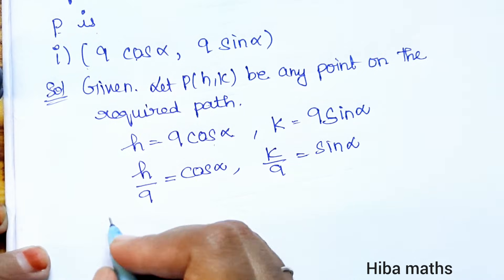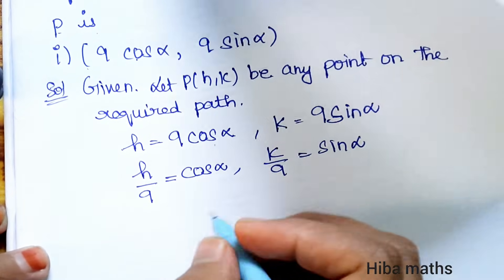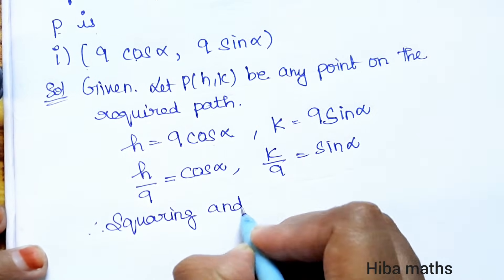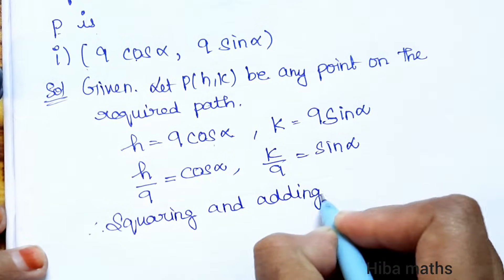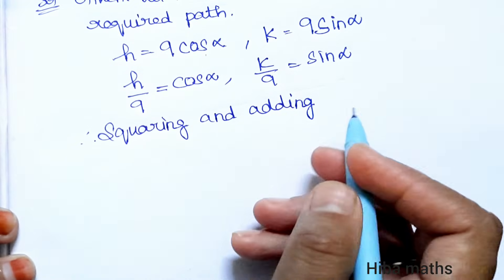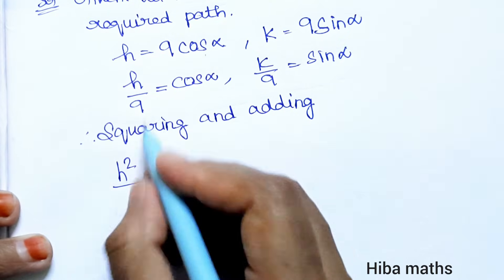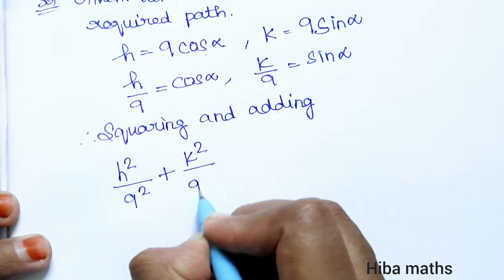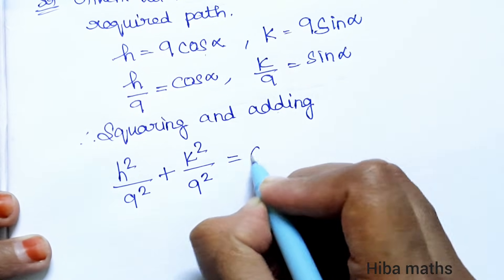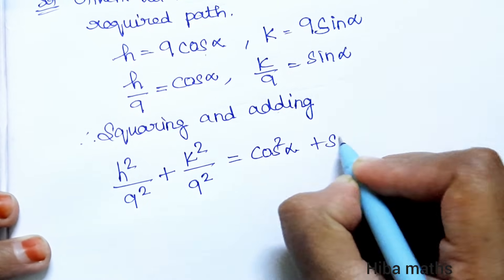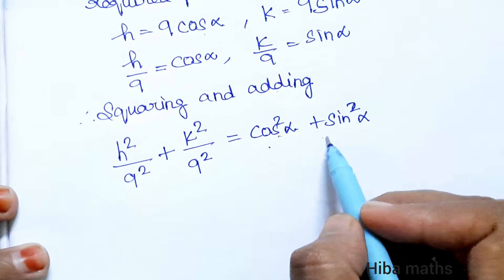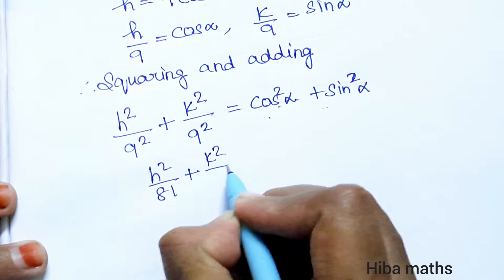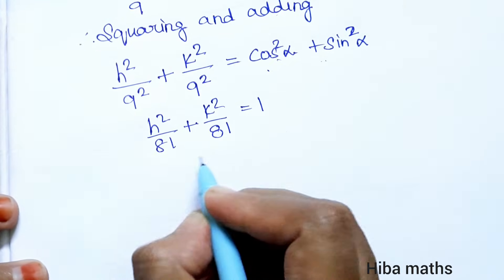Now squaring and adding both equations: H squared by 9 squared plus K squared by 9 squared equals cos squared alpha plus sin squared alpha. Since cos squared alpha plus sin squared alpha equals 1, we get H squared by 81 plus K squared by 81 equals 1.